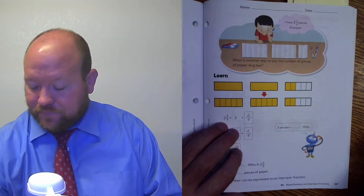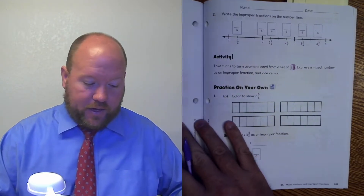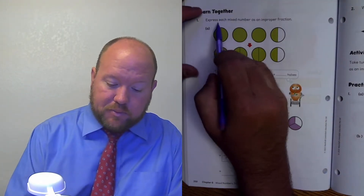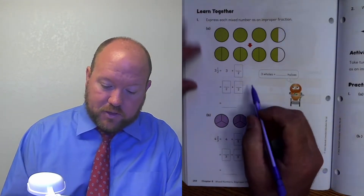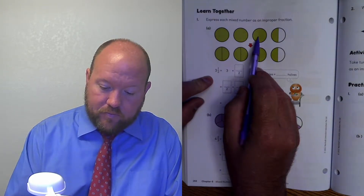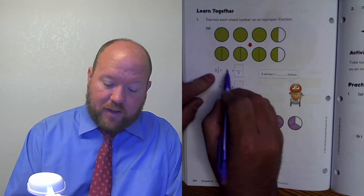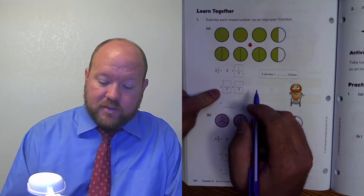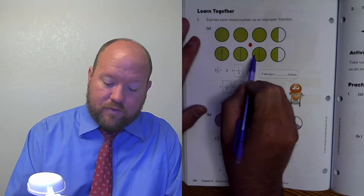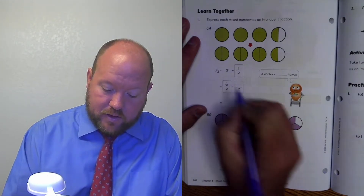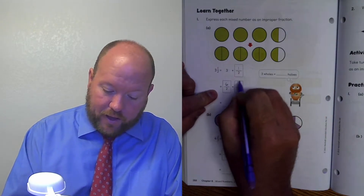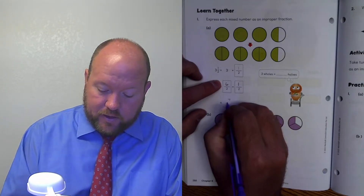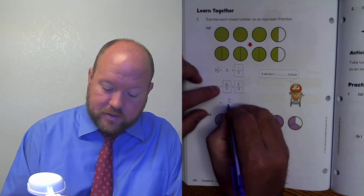Let's look at page 268. It says express each mixed number as an improper fraction. Here we have three and a half. I'm going to divide this into the three and a half. Three wholes divided into halves gives us one, two, three, four, five, six halves. So I have six halves plus the one half that I already had. Six plus one is seven, and the denominator stays the same — so seven halves.